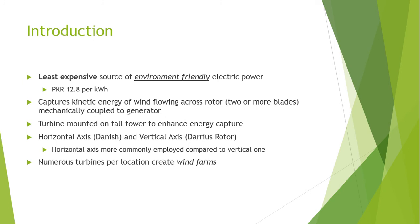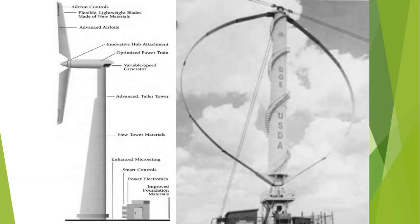There can be numerous turbines per location, and when numerous turbines are combined in a single location, these are called wind farms. These are examples of the two types of windmills — this is the horizontal one and this is the vertical design.